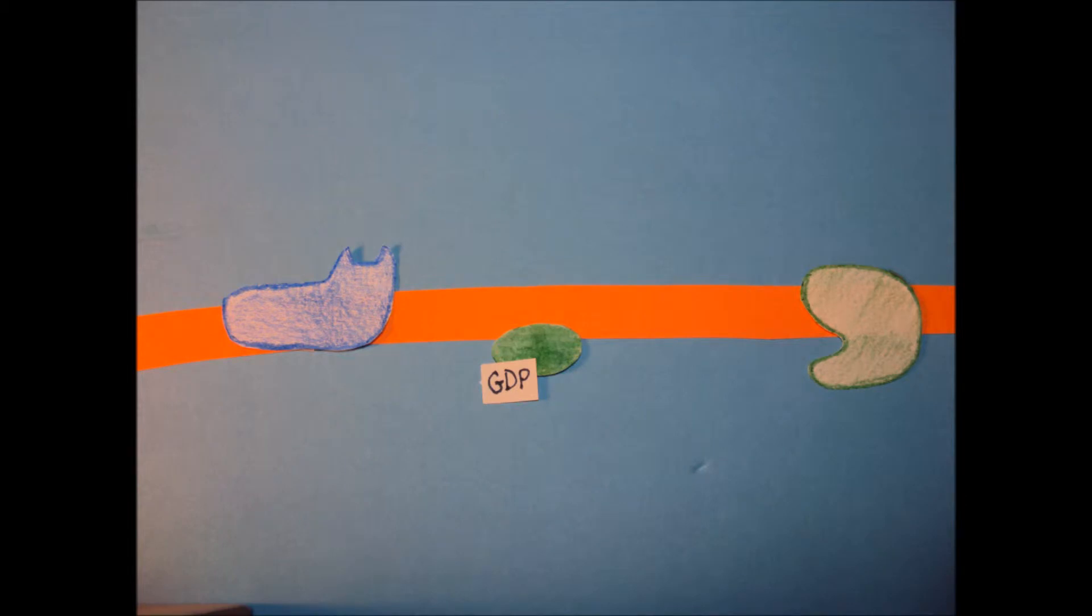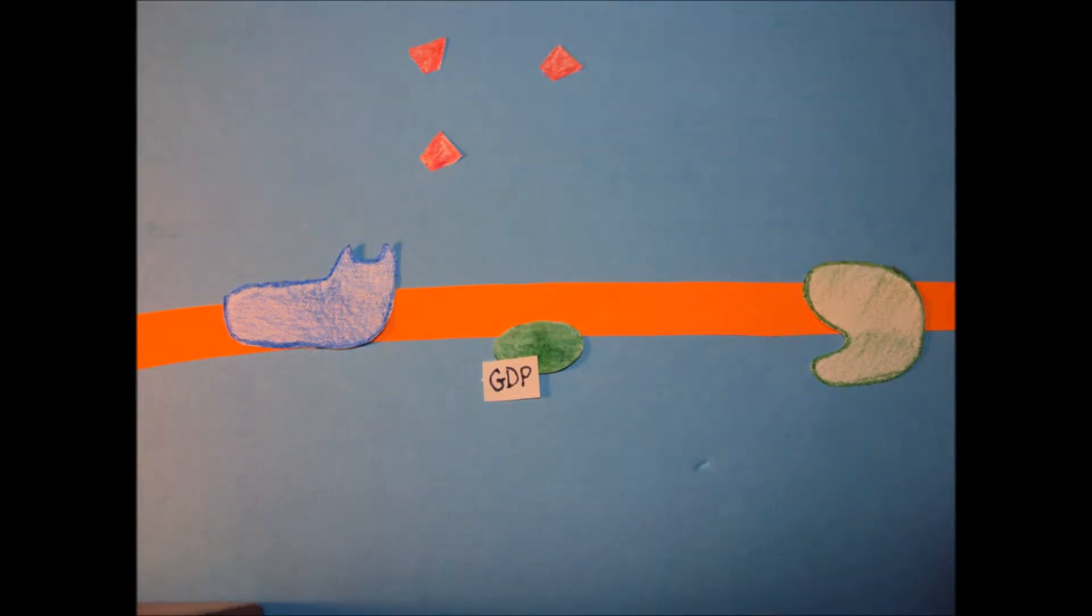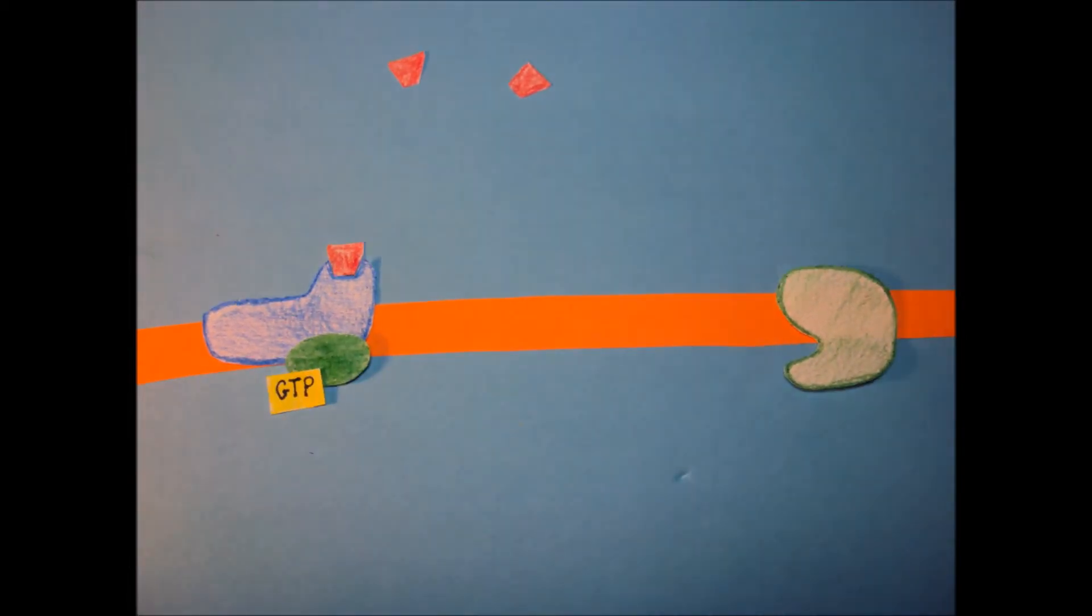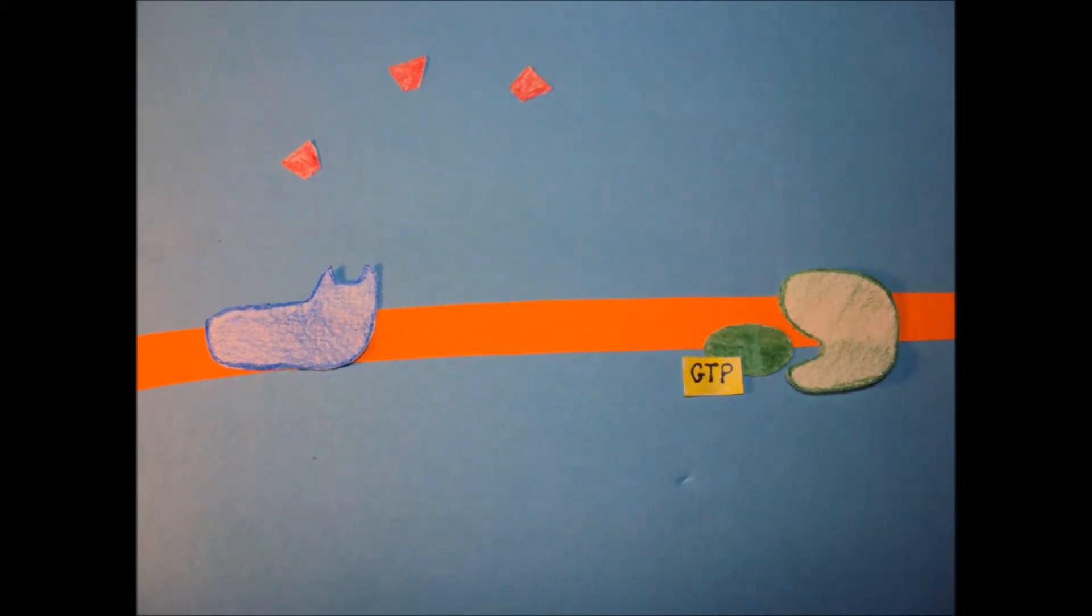When GDP is attached to the G protein, the protein is inactive. When a signal molecule binds to the G-linked receptor, the receptor changes shape and binds to the G protein. GTP replaces GDP on the G protein, activating the protein. The activated protein moves and binds to the enzyme, activating it.